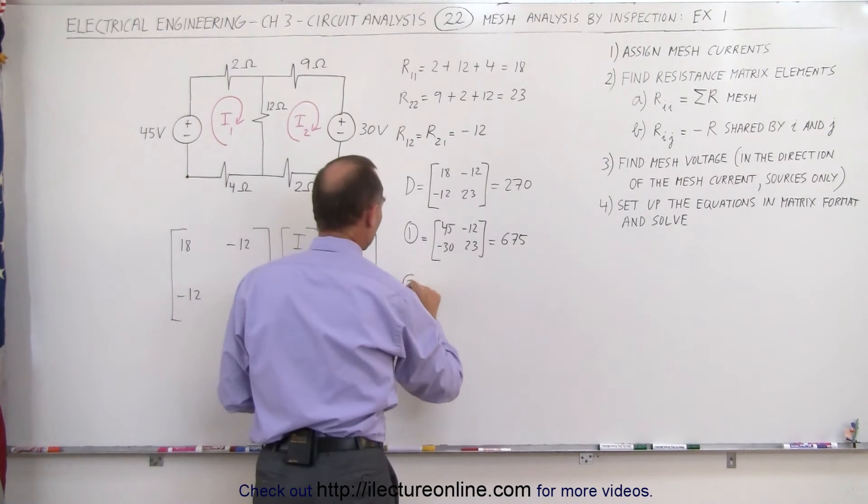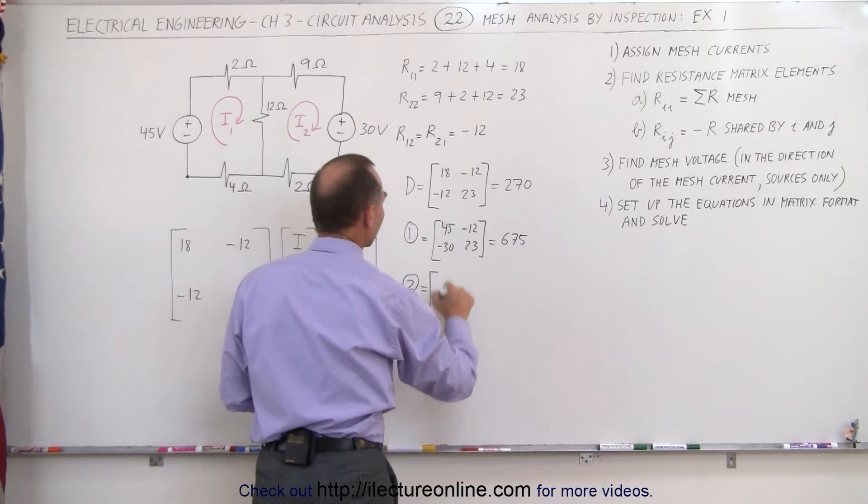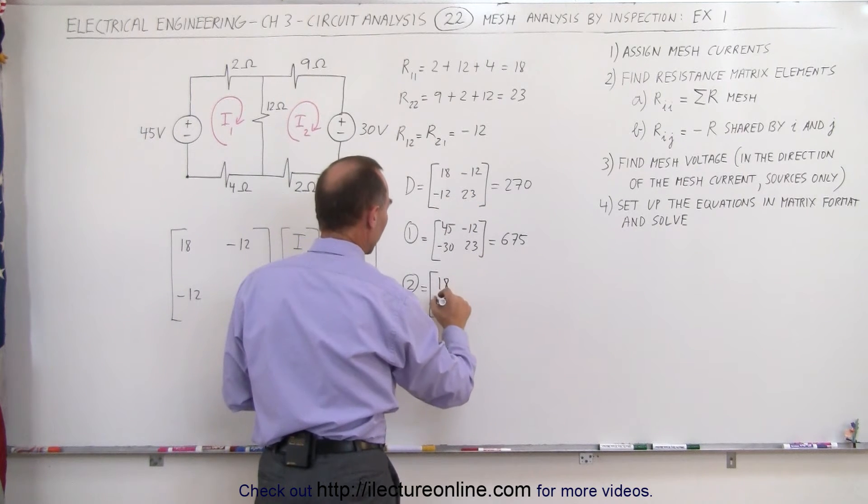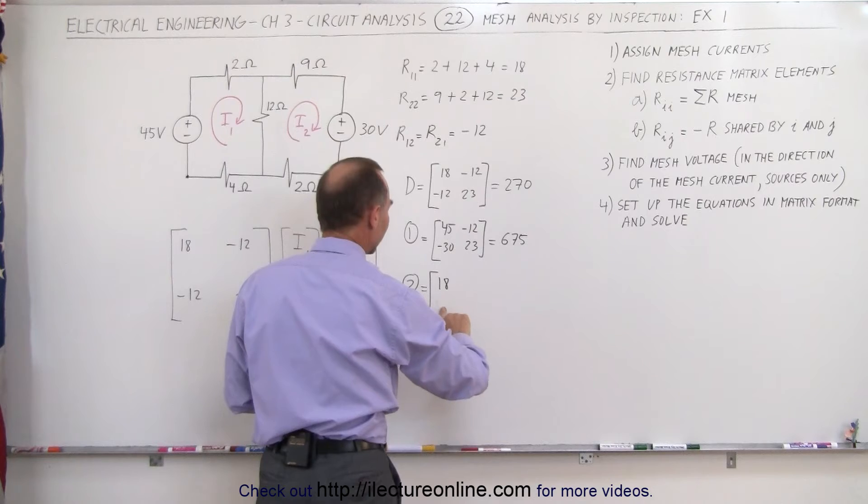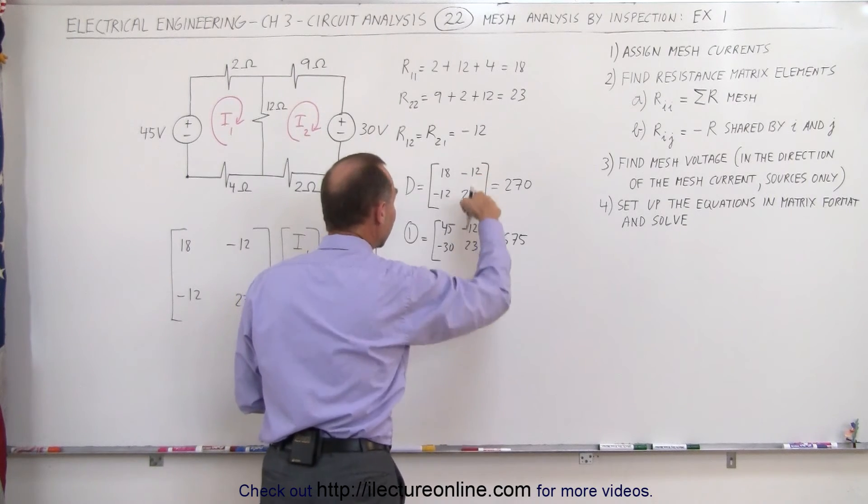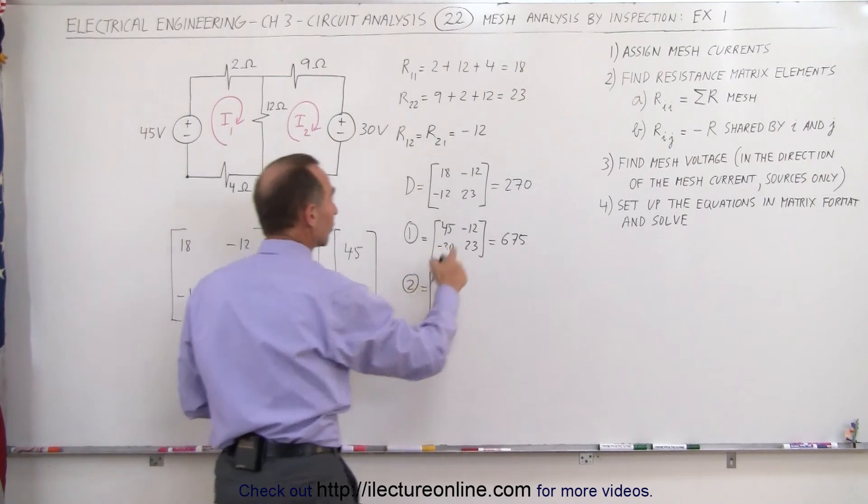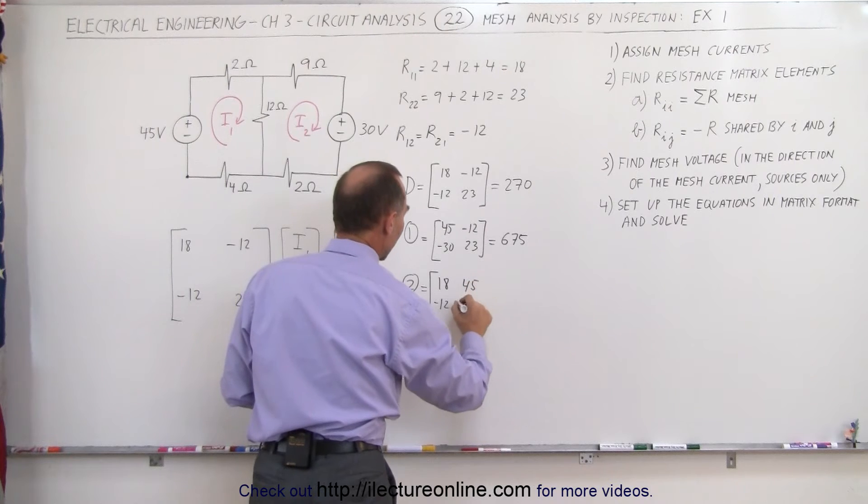To find the second matrix, we take the first matrix here—the determinant matrix—we keep the first column, but we replace the second column by the voltages in the voltage matrix. So this becomes 45 and minus 30.